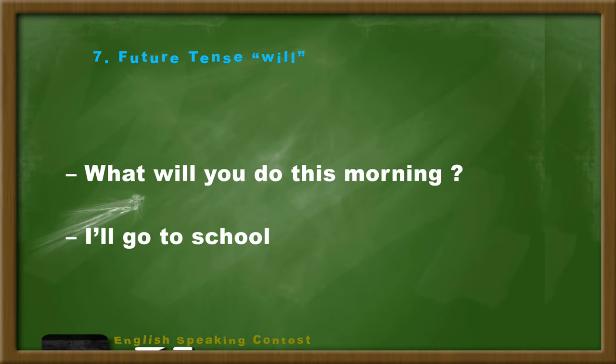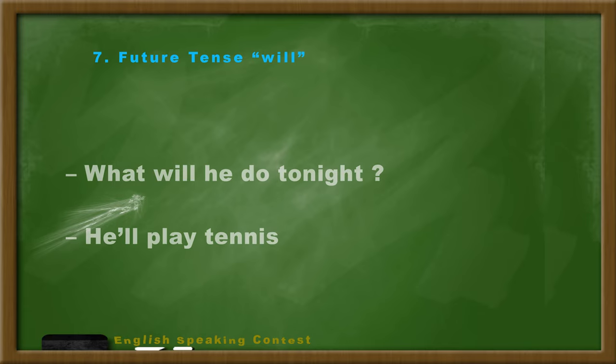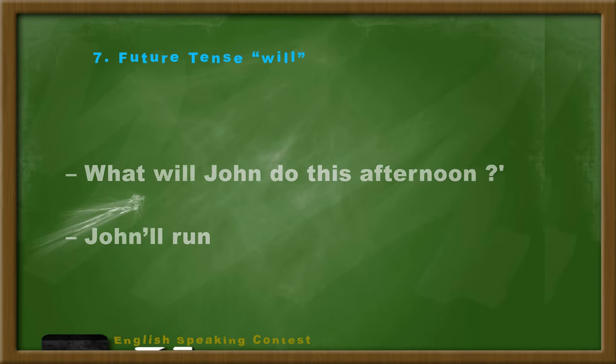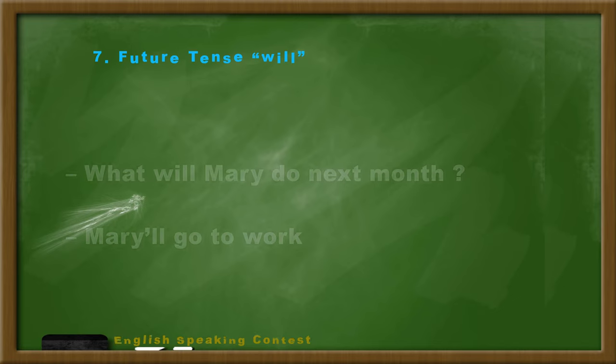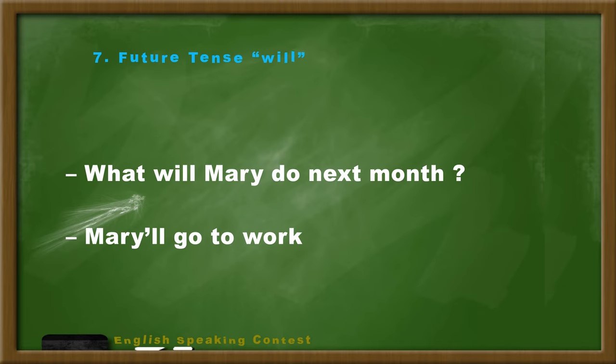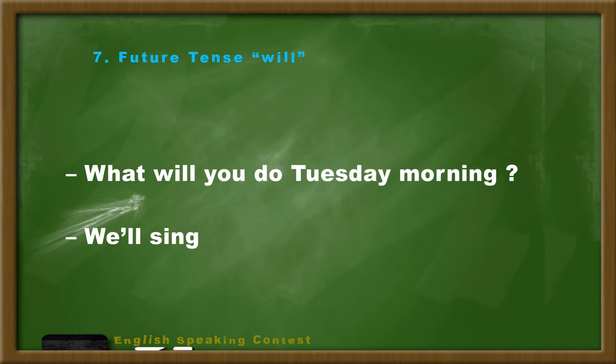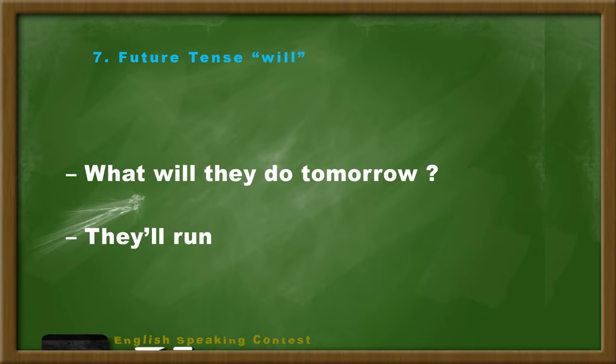What will you do this morning? I'll go to school. What will he do tonight? He'll play tennis. What will she do next week? She'll swim. What will John do this afternoon? John will run. What will Mary do next month? Mary will go to work. What will you do Tuesday evening? We'll sing. What will they do tomorrow? They'll run.